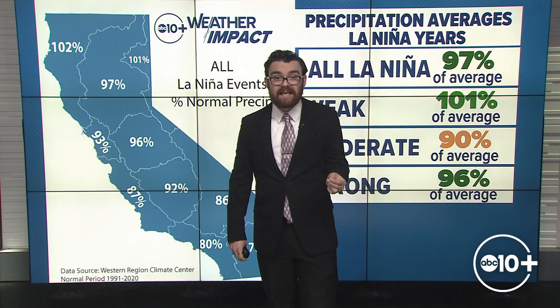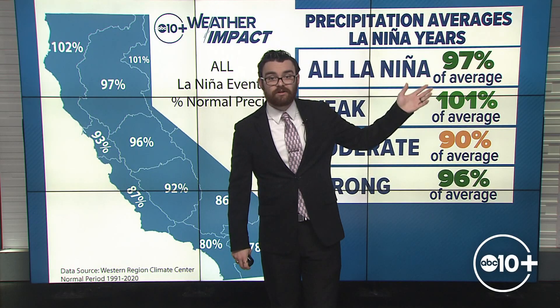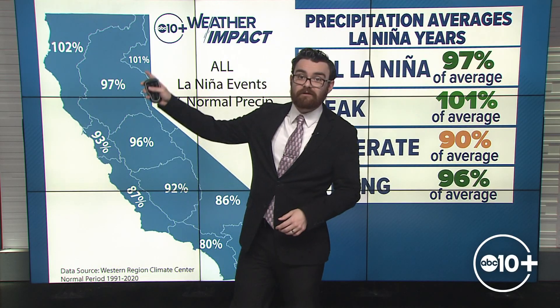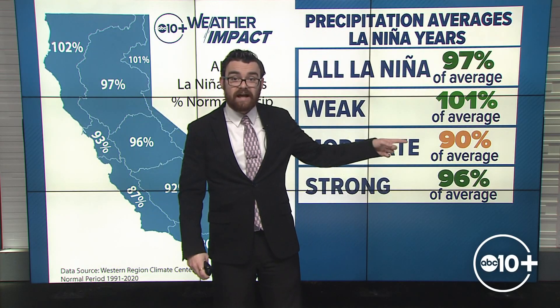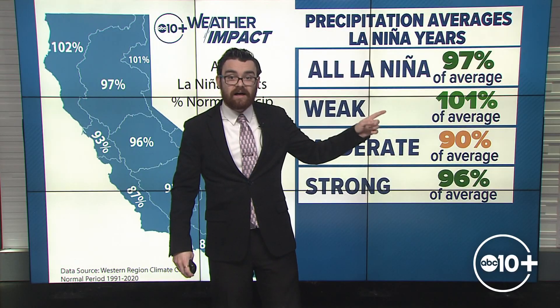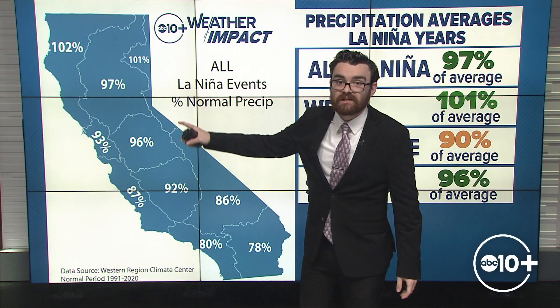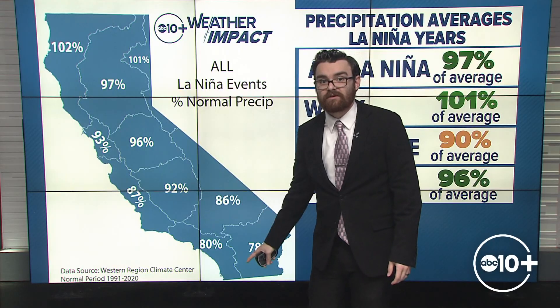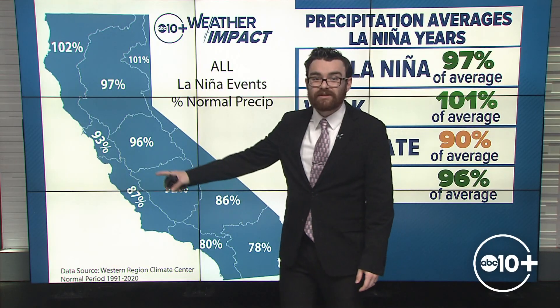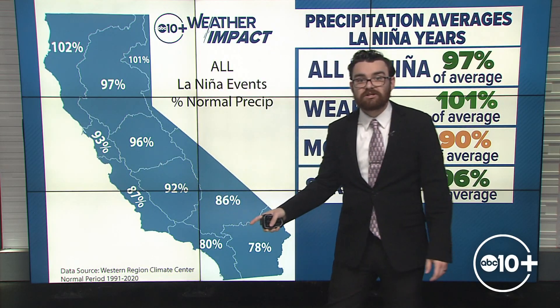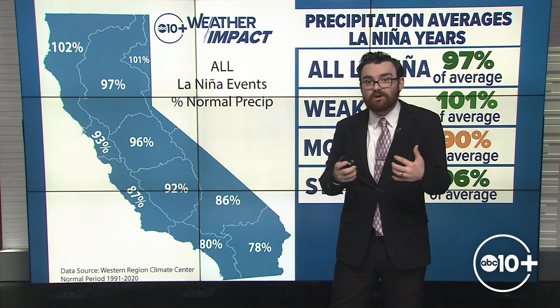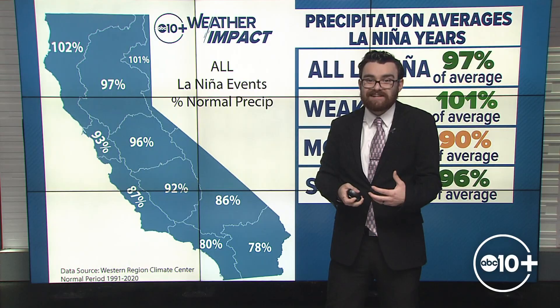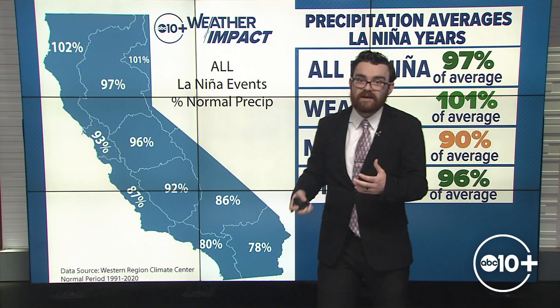We can look at this by region as well. During moderate La Niña years it's 90%, but during all La Niña years it's 97%. Basically the entire state during a La Niña event sees below average precipitation, which correlates with that statewide number.